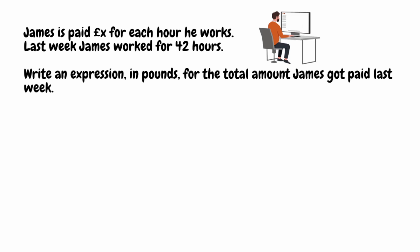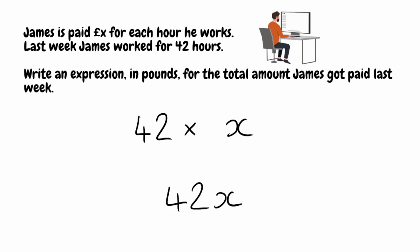Applying this to the question and the variable we were given: to find the total amount he got paid last week, we take the 42 hours worked and multiply by x pounds per hour. So 42 times x gives us 42x. And because this expression is in pounds, we need to put our pound symbol at the beginning. So our final answer is £42x.